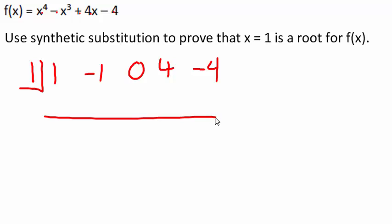Now, if x equals 1 is truly a root, then that means we should end up with a 0 for our remainder. Because the point would be on the graph, which makes it a root. If we don't get 0, that means we either screwed up or they gave us a problem that doesn't work out.